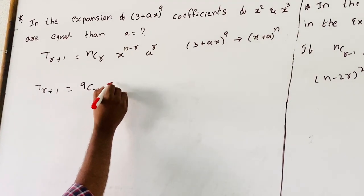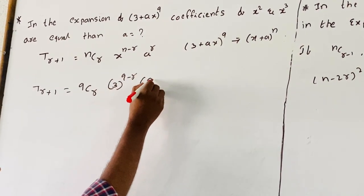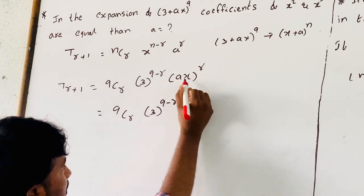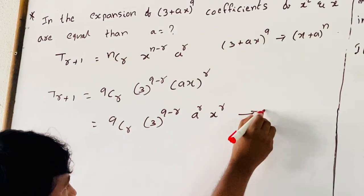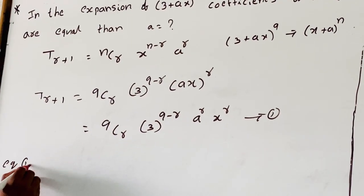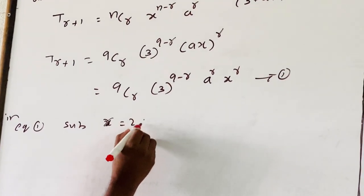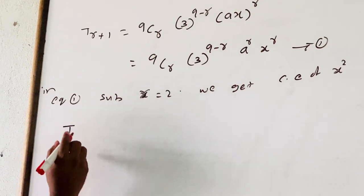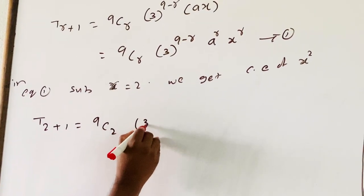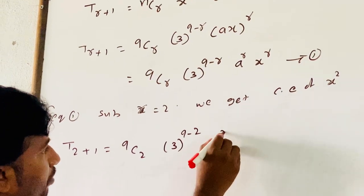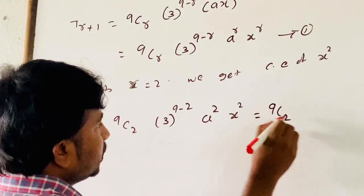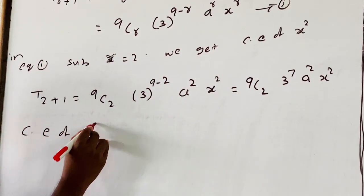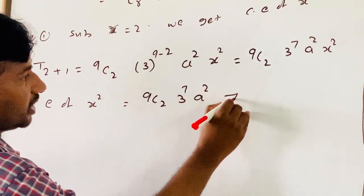Substituting into the formula: T(r+1) = 9Cr * 3^(9-r) * (ax)^r = 9Cr * 3^(9-r) * a^r * x^r. This is equation one. Now, substituting r=2 into equation one to get the coefficient of x²: T(2+1) = 9C2 * 3^(9-2) * a² * x² = 9C2 * 3^7 * a² * x². So the coefficient of x² is 9C2 * 3^7 * a². This is equation two.